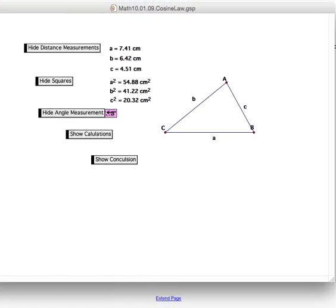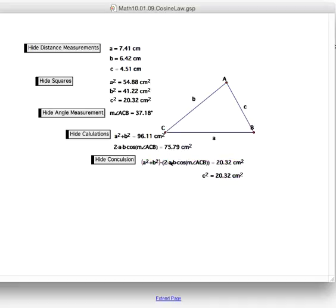I'm just going to measure one angle, which happens to be angle C here. What I'm going to do is show you that if I add A squared plus B squared and I subtract this correction factor of 2AB times the cos of that angle, I get C squared, this value right here.